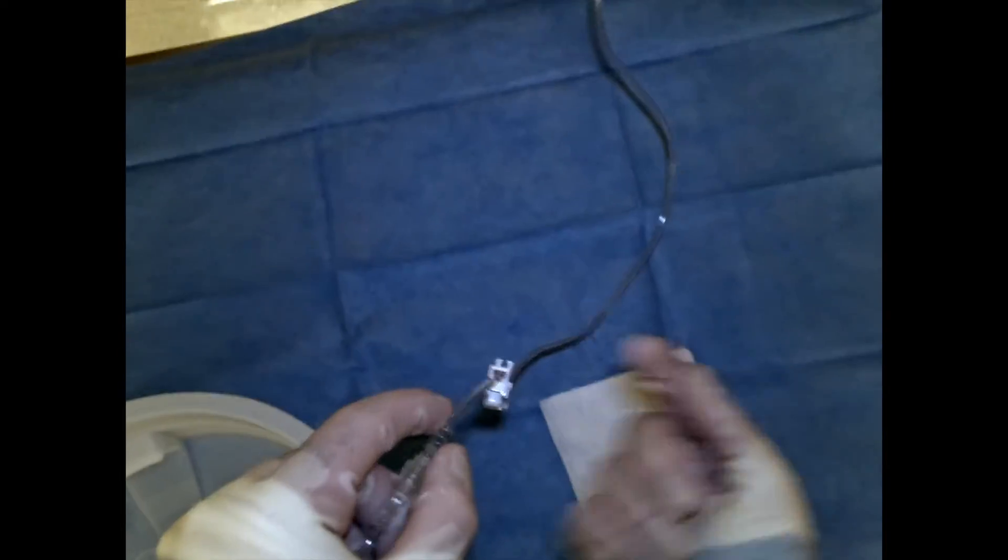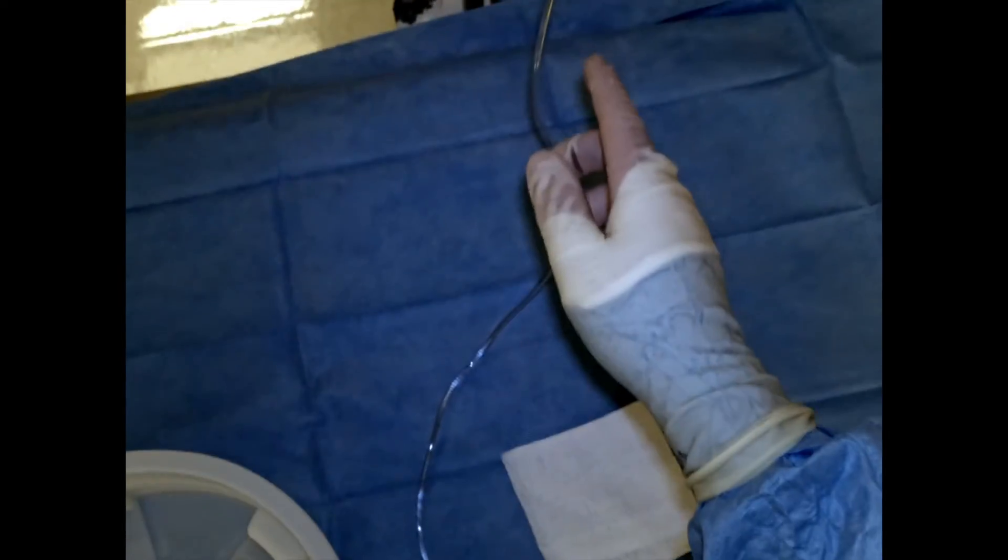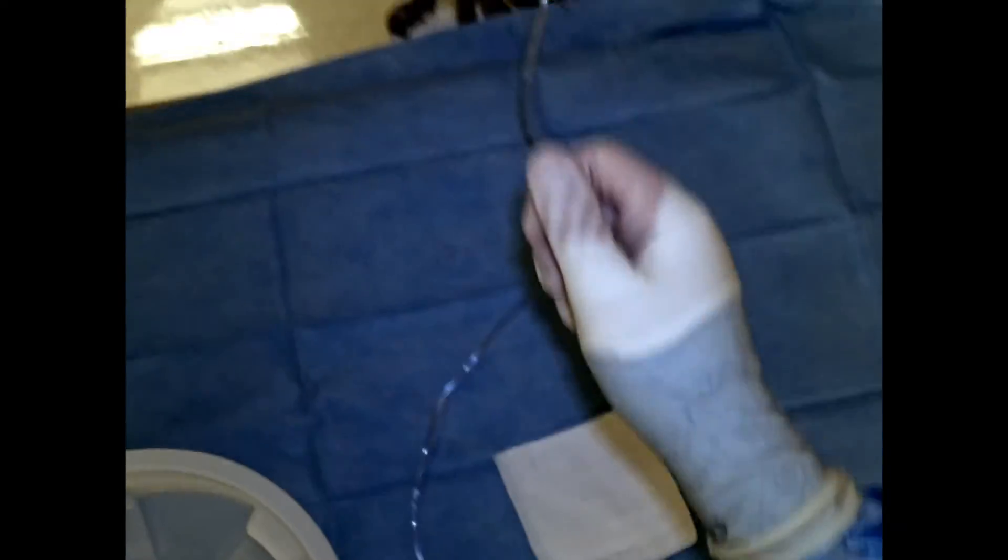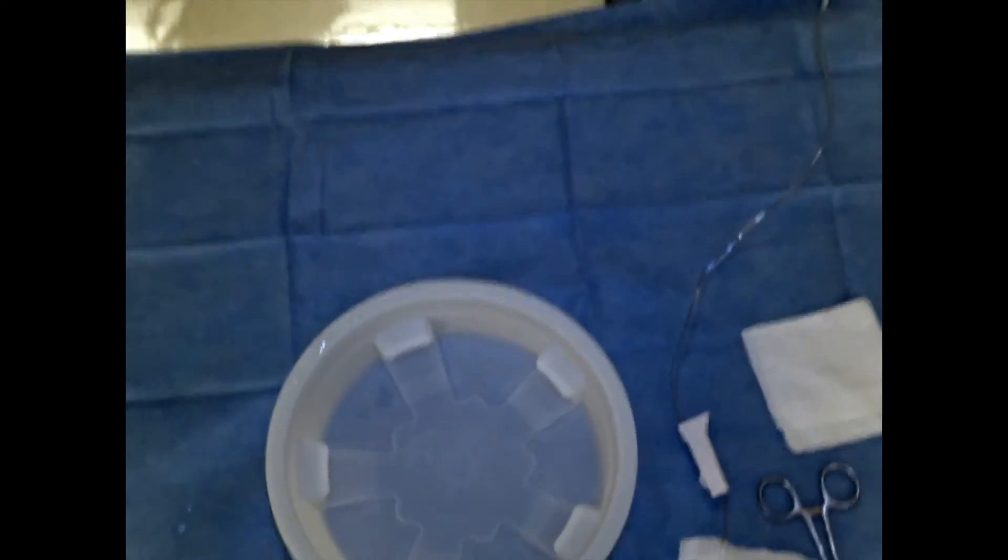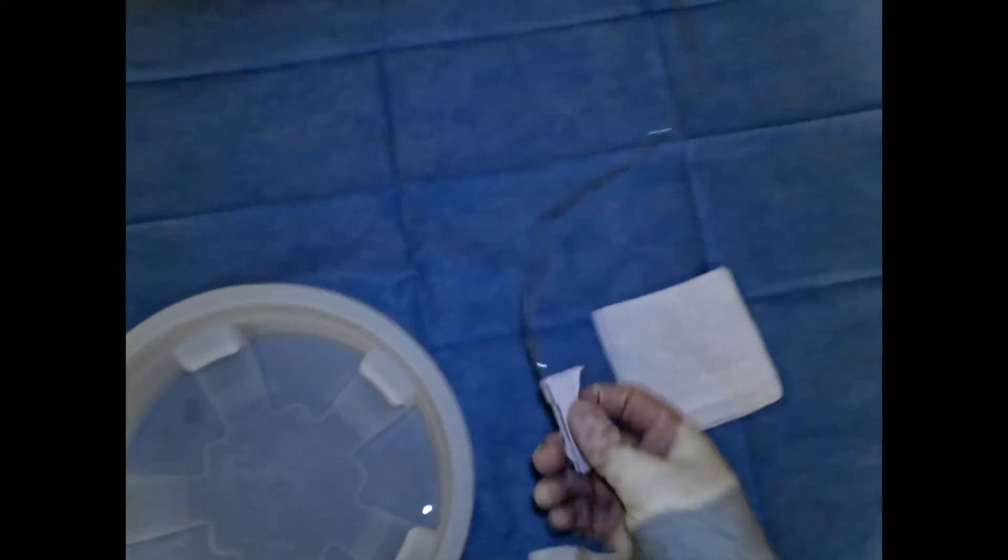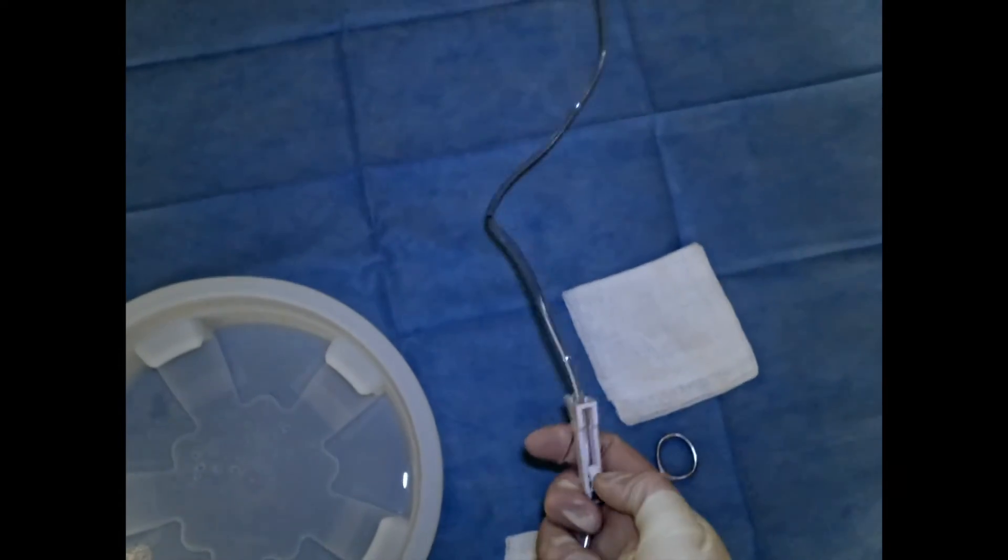We'll start close to where it hooks up to the saline bag, and then we'll go more distal, wiping and tapping as we go and inspecting closely to make sure that there is no water left. This system we use has this roller clamp, so we can unclamp it.